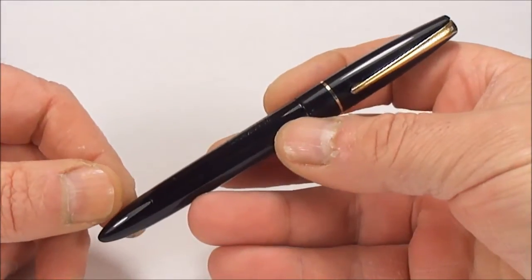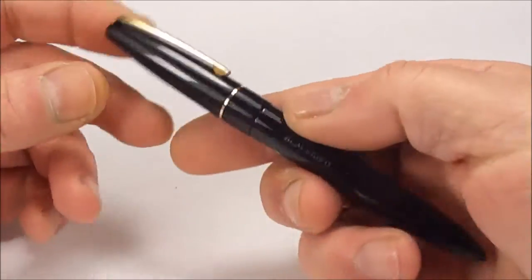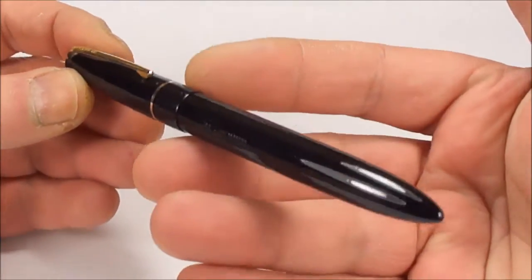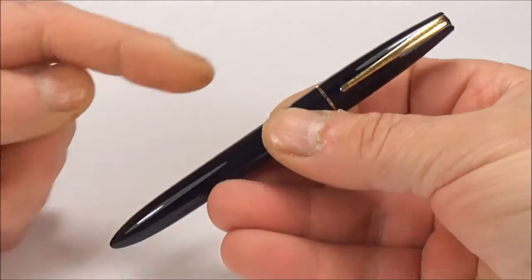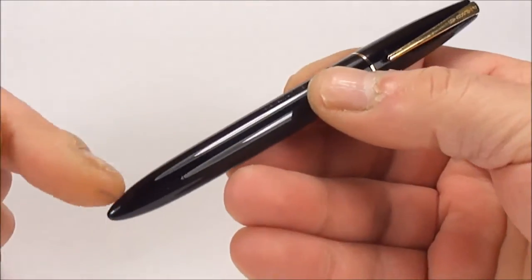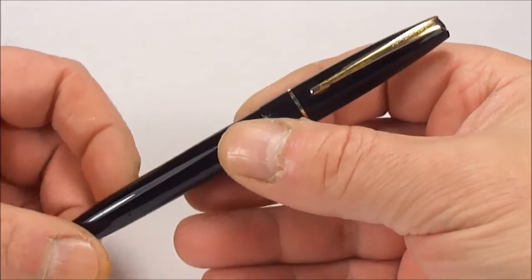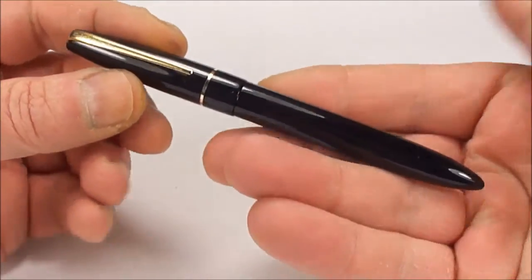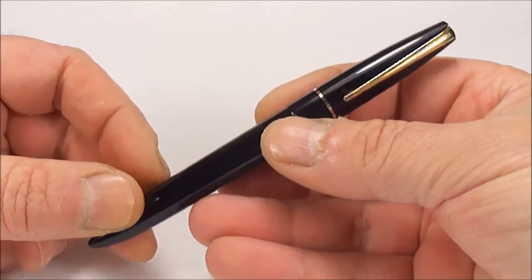This is the Blackbird fountain pen from the company Mabie Todd and Company. You can see it's got this torpedo or cigar shape. This particular one as you can see is in this black color.